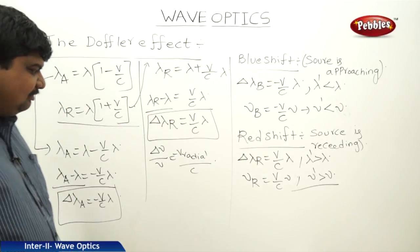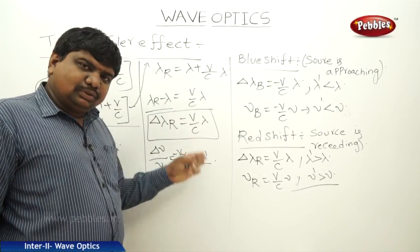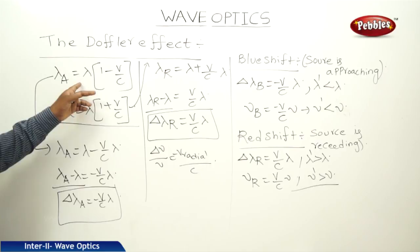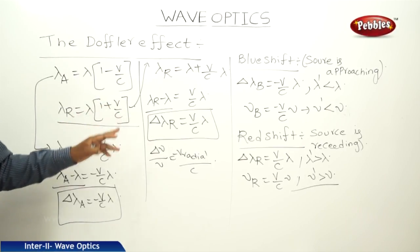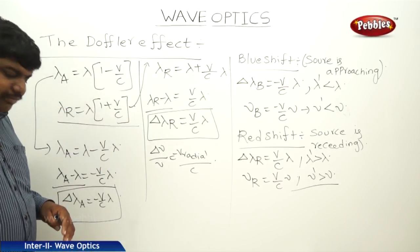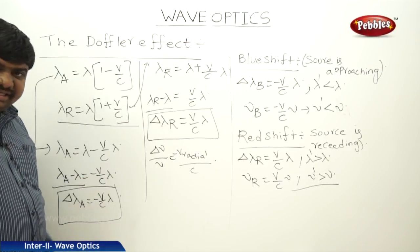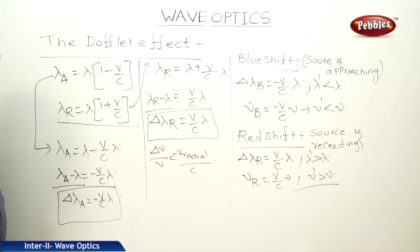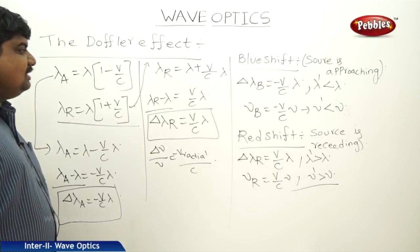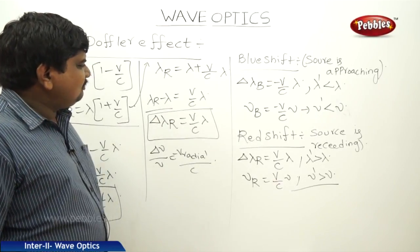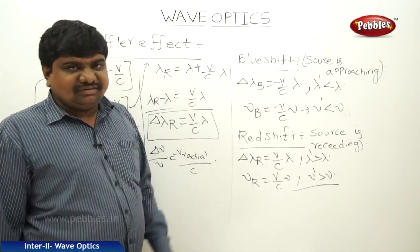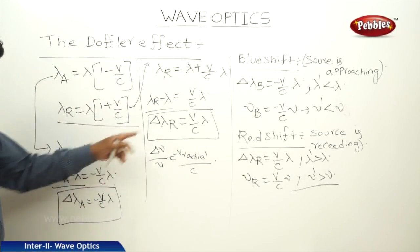Here, v radial is the velocity along the line joining the source to the observer. Lambda approach equals lambda into 1 minus v by c, and lambda recession equals lambda into 1 plus v by c. Expanding: lambda approach minus lambda equals minus v by c into lambda, so delta lambda approach equals minus v by c into lambda. And lambda recession minus lambda equals v by c into lambda, so delta lambda recession equals v by c into lambda. This is the red shift for recession and blue shift for approach.